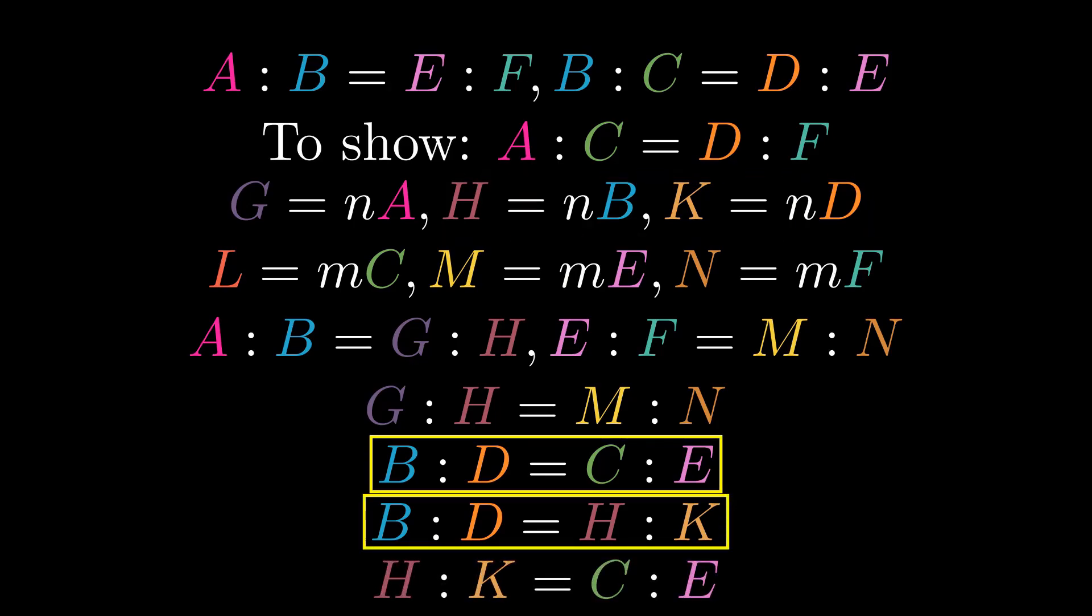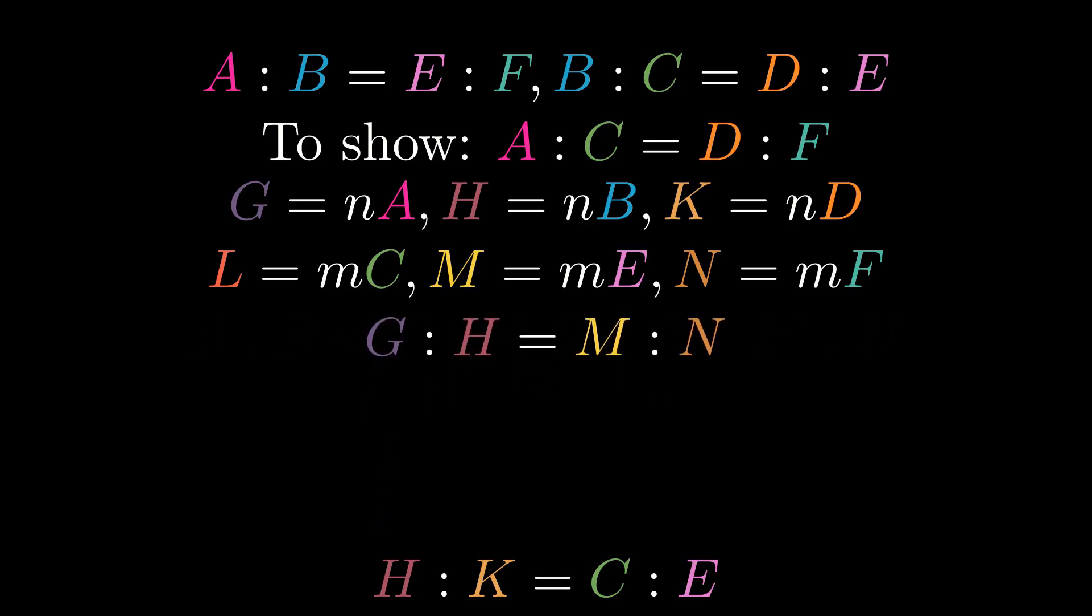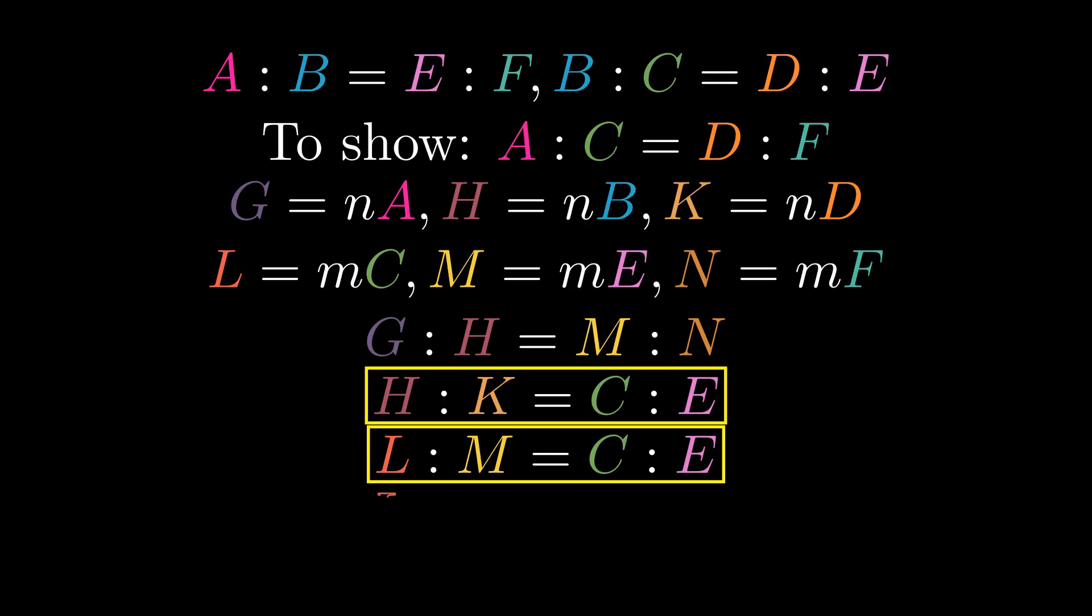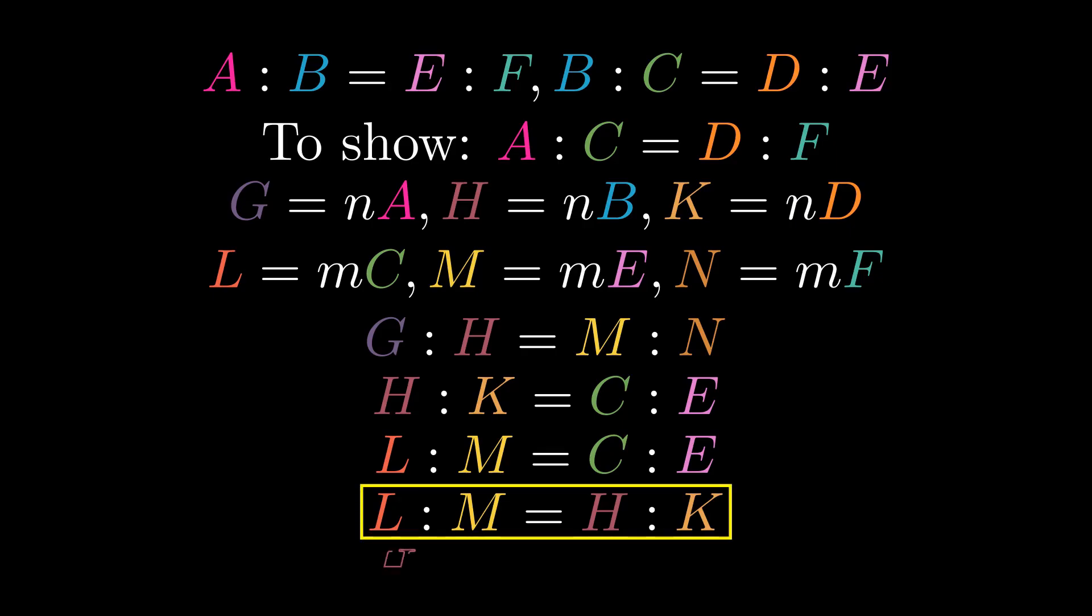Therefore, H to K is proportional to C to E. L and M are also equal multiples of C and E, so L to M is proportional to C to E, and is thus also proportional to H to K. And the alternate ratios are also proportional, so H to L is proportional to K to M.